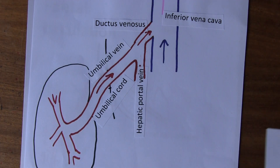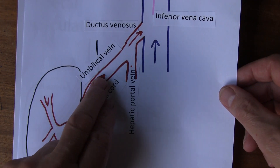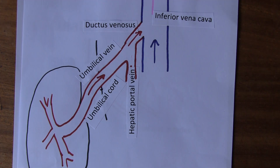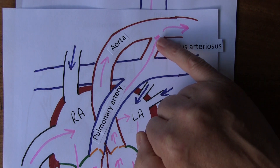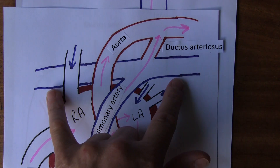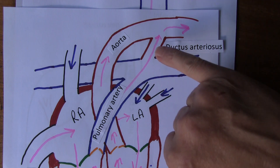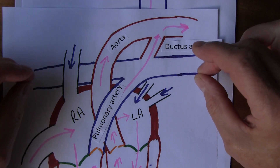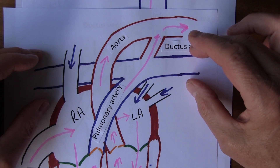Firstly, these bradykinins will constrict the umbilical arteries and the umbilical vein. They will also have some effect in constricting the ductus arteriosus. As well as that, the same bradykinins actually inhibit constriction of the pulmonary vessels — so the same bradykinin constricts the umbilical arteries and vein and the ductus arteriosus, but dilates the pulmonary arterioles especially, meaning the blood supply to the lungs is ensured.